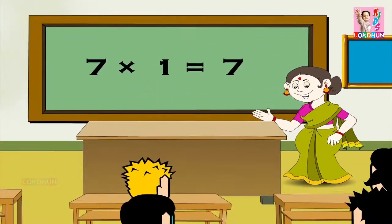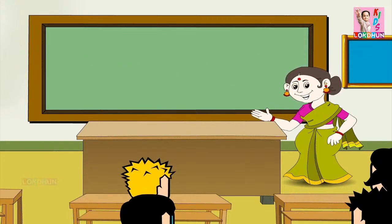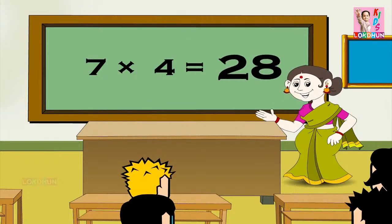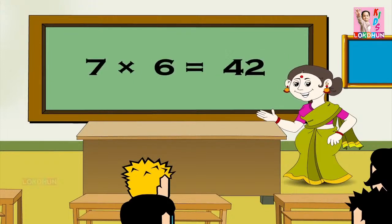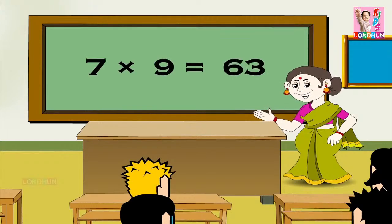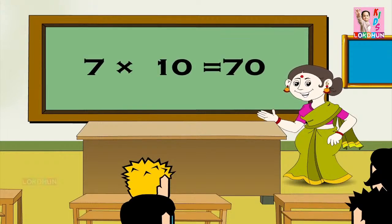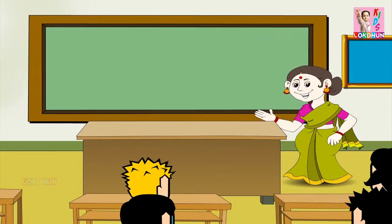7 1s are 7, 7 2s are 14, 7 3s are 21, 7 4s are 28, 7 5s are 35, 7 6s are 42, 7 7s are 49, 7 8s are 56, 7 9s are 63, 7 10s are 70, 7 11s are 77, and 7 12s are 84.